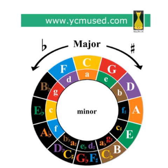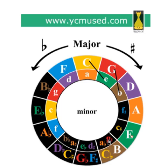Major thirds are shown using the clockwise diagonal. For example, from C to E is a major third. From G to B is a major third. From E to G sharp is a major third. All the way around the circle going in the clockwise diagonal, major thirds can be found.